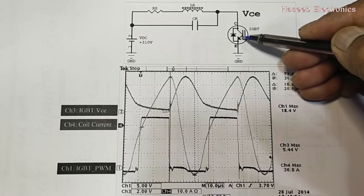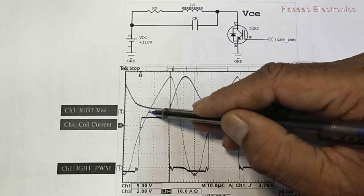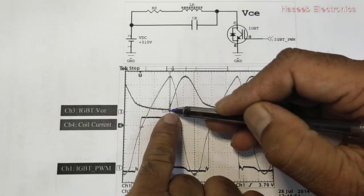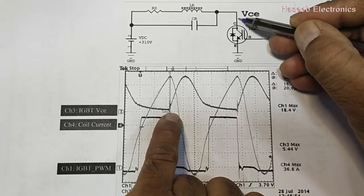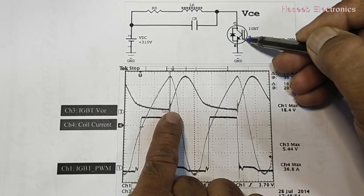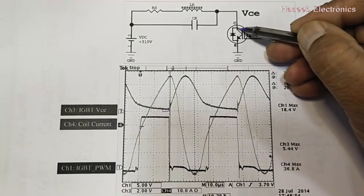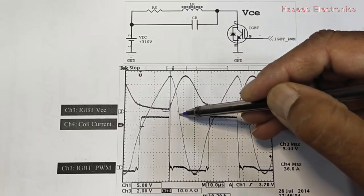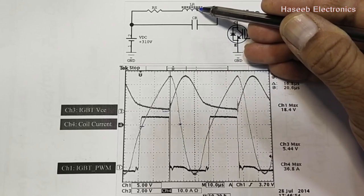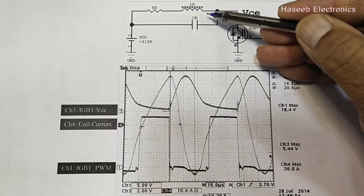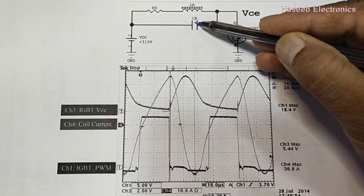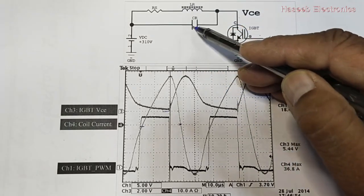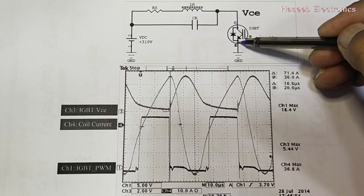When it switches, it causes current to flow in the coil — this is the coil current. When the PWM gate drive turns off, the collector voltage will start to increase gradually, because its gate is turned off but the collector-to-emitter junction will take some time — that is called fall time — then the coil current will become zero. After that, the stored magnetic field will charge the capacitor in reverse polarity, opposite to the applied voltage. In this scenario, the collector-to-emitter current is stopped.